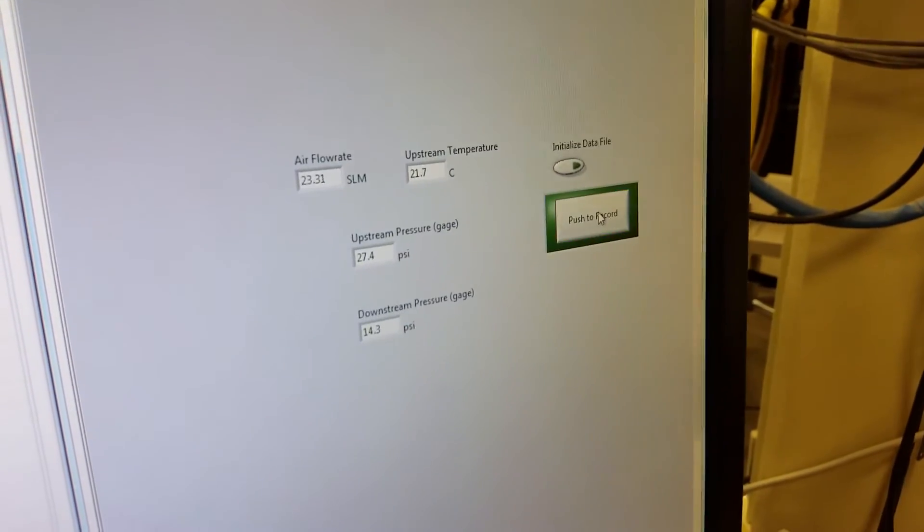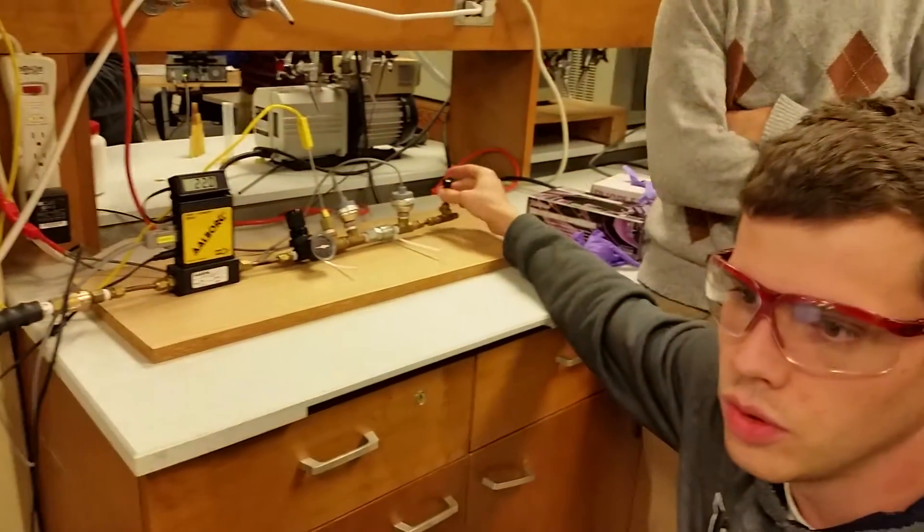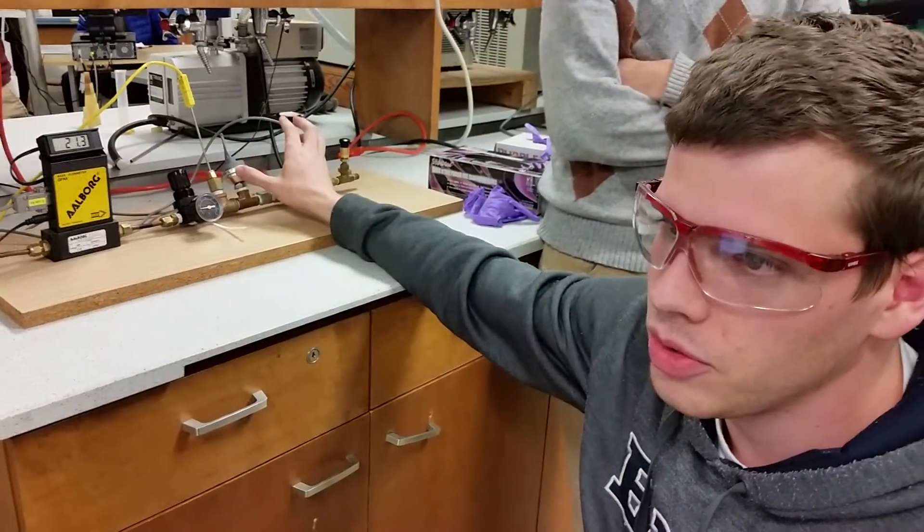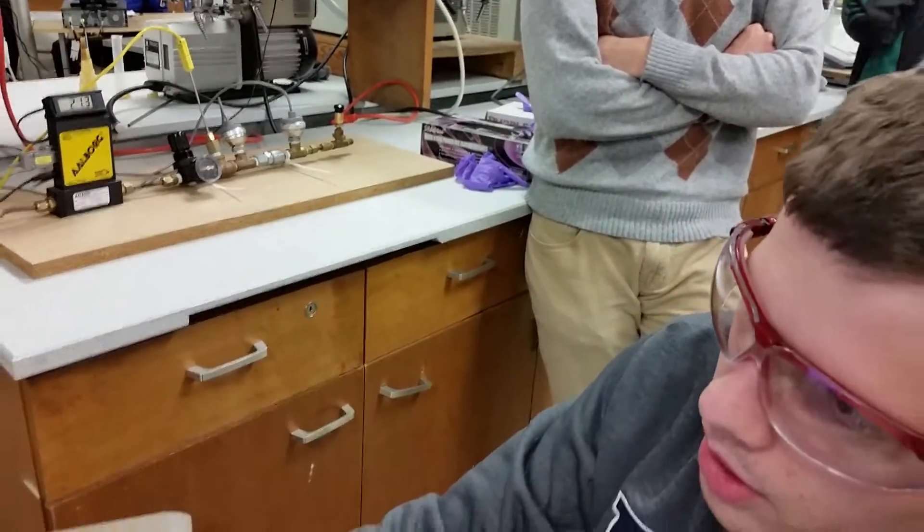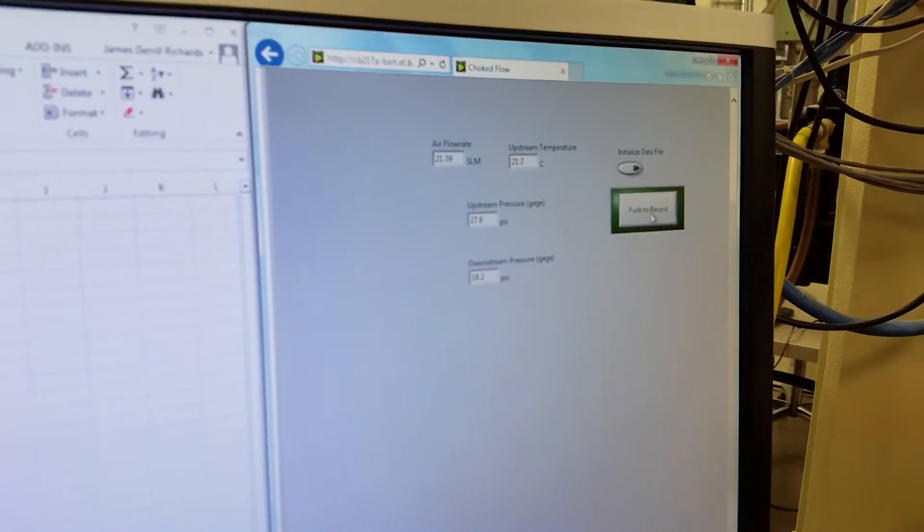Then you just collect your data like this, however many points you're going to take. You can adjust your nozzles to change your pressure difference between your upstream and downstream, and then take more data points if you need.